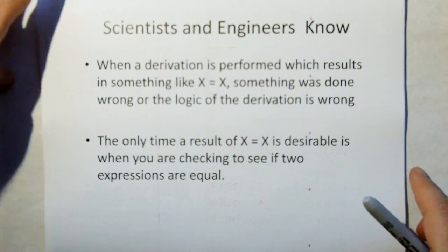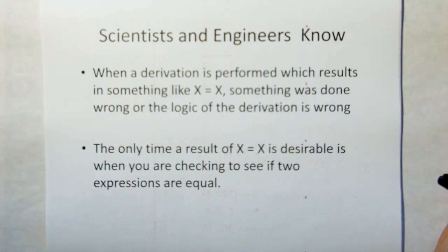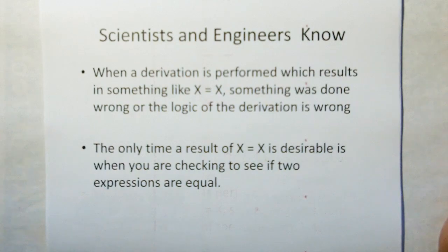Now, scientists and engineers know when a derivation is performed which results in something like X equals X, something was done wrong. You ended up substituting the same equation twice, or the logic of a derivation was just plain wrong. The only time a result of X equals X is desirable is when you're checking to see if two expressions are equal.